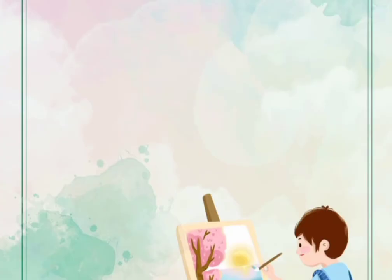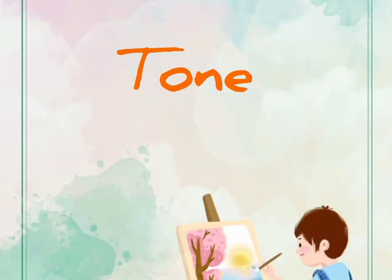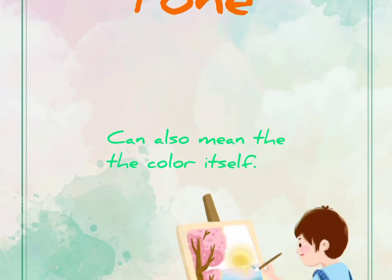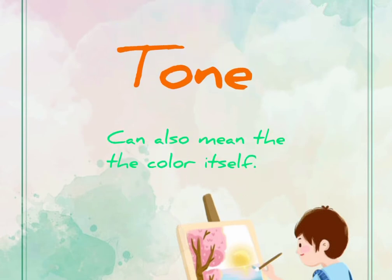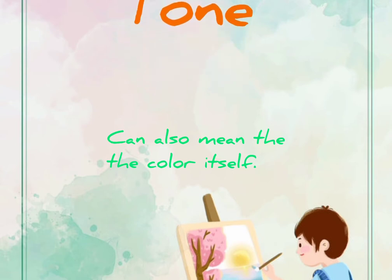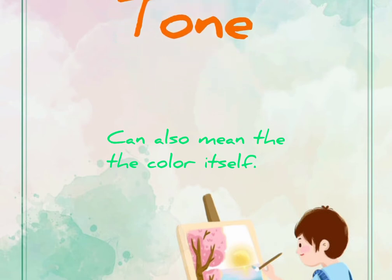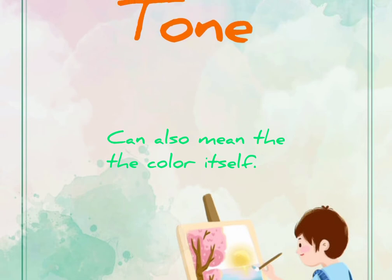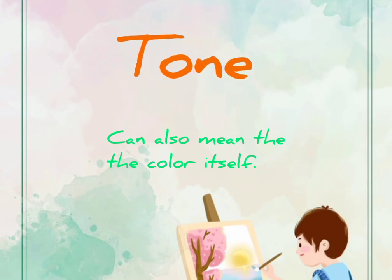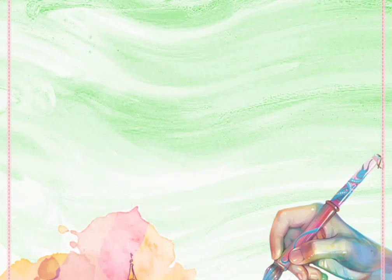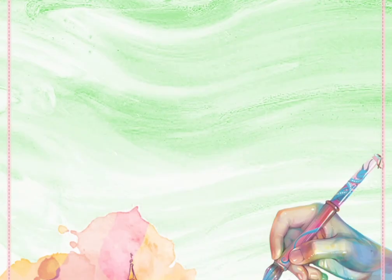The second element is tone. Tone refers to the relative lightness or darkness of a color. One color can have an almost infinite number of different tones. Tone can also mean the color itself.